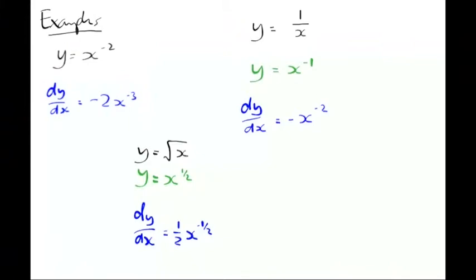These last two, because it gave it to us in the normal form, we could convert them back. Minus x to the minus 2 is the same as minus 1 over x squared. And half x to the minus half is the same as 1 over 2 root of x.